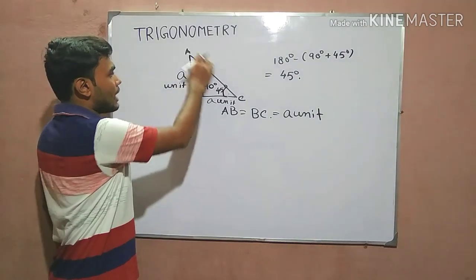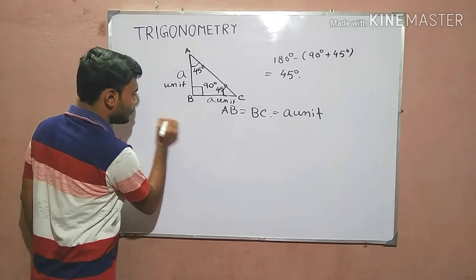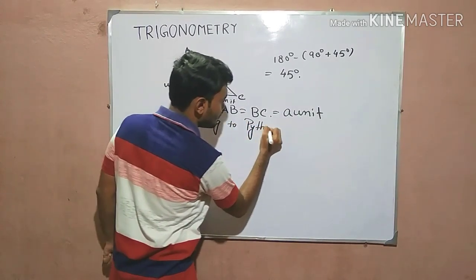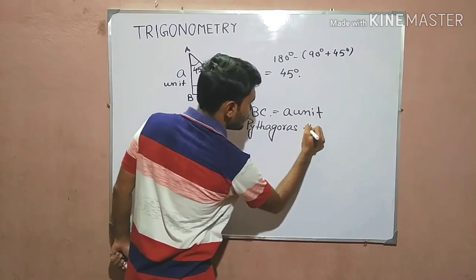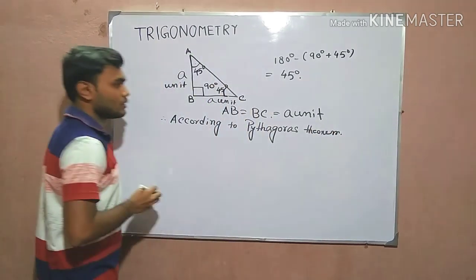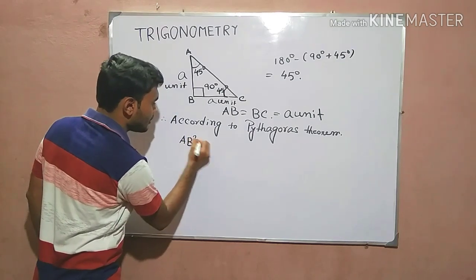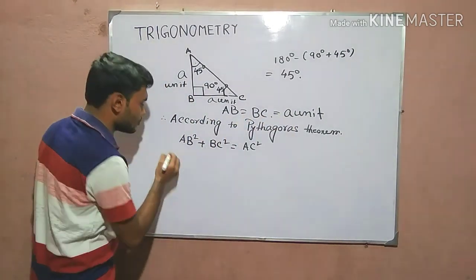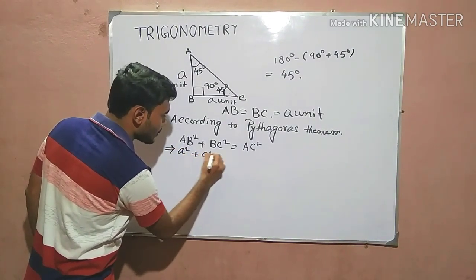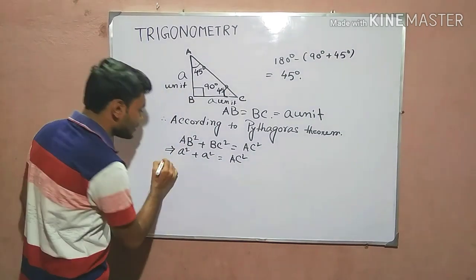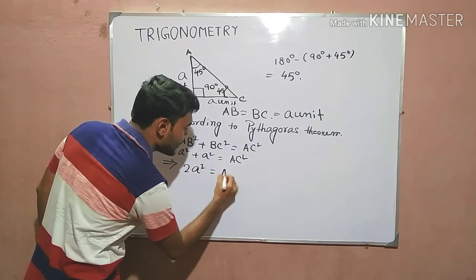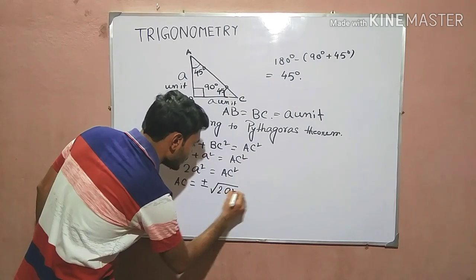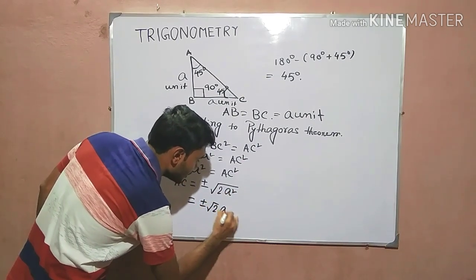That means we are taking these values as A units. Now obviously we also need the value of AC, so we will use the Pythagorean theorem. According to the Pythagorean theorem, AB² + BC² = AC². Now AB and BC are equal and that is A units, so it would be A² + A² = AC², which gives 2A² = AC². Therefore AC equals √2 · A units.